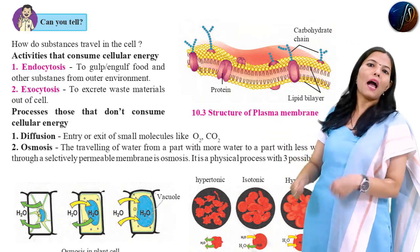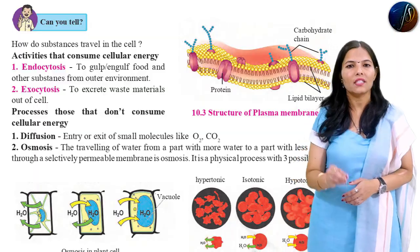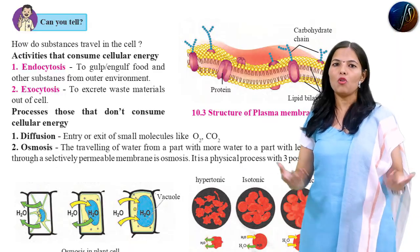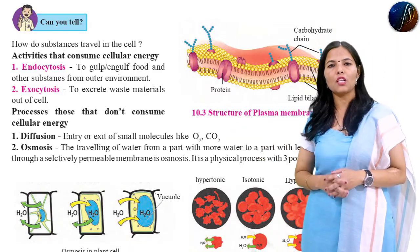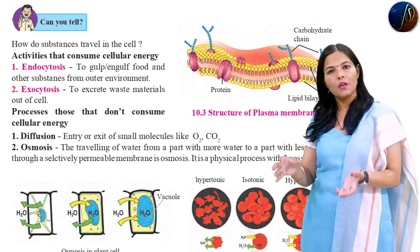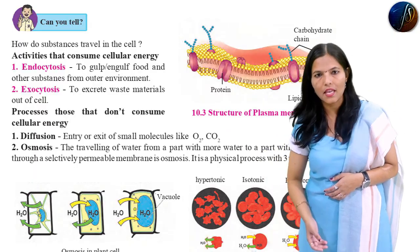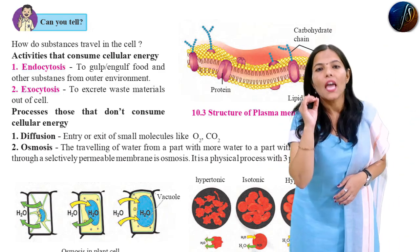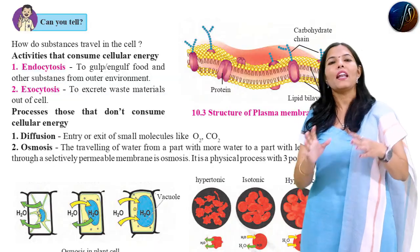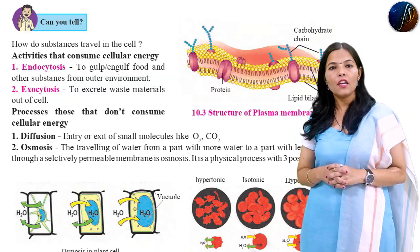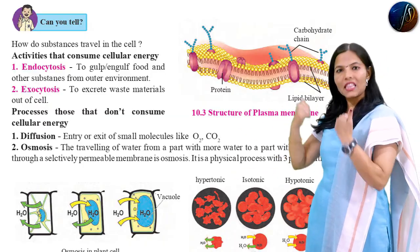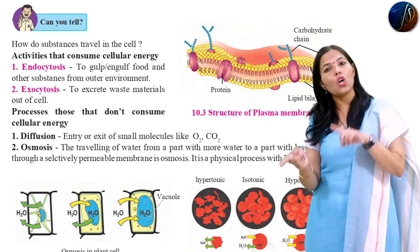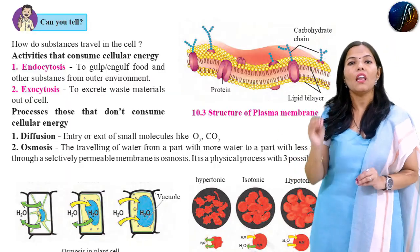Exocytosis — excretion. Exo means to excrete the waste material from the cell. To excrete the waste material from the cell is called exocytosis. Both endocytosis and exocytosis are energy-consuming cell processes.